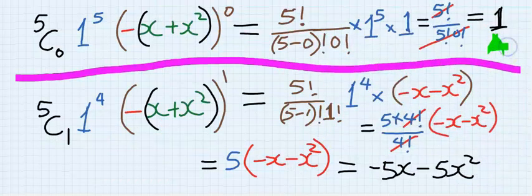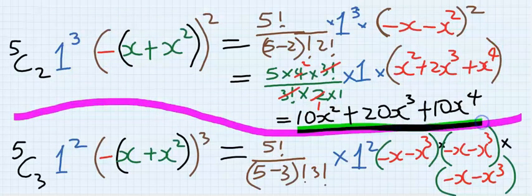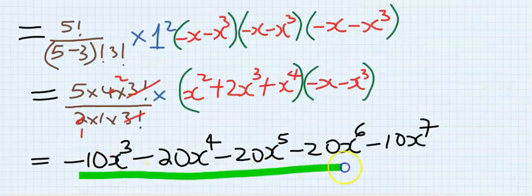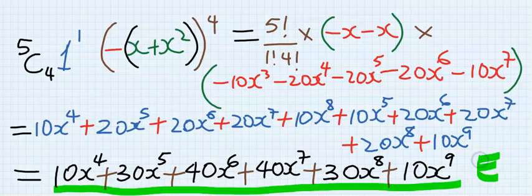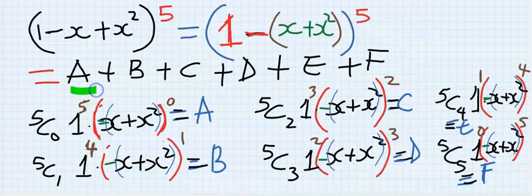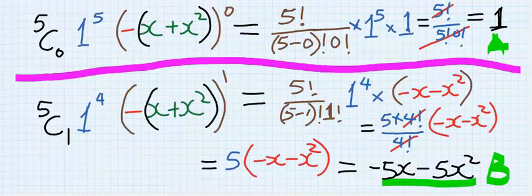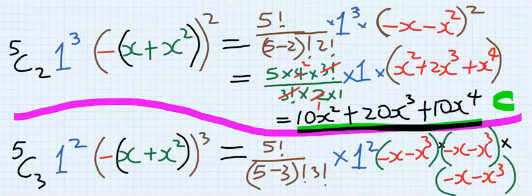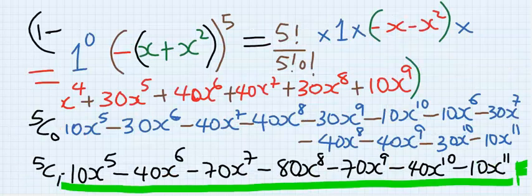So solving this: we have solved the first term — this is a; we have solved this — this is b; this is c; this is d; this is e; and this is f. Put it all together: a plus b plus c plus d plus e plus f. I will leave you to open up all the brackets. I want you to pause the video at intervals to see how I got a, b, c, d, e, and f.